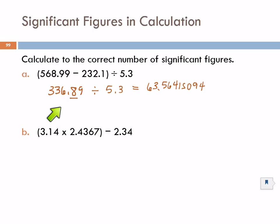So here we have four sig figs divided by two sig figs. So 2 is the smallest. So this answer should only have two significant figures. That second significant figure is the 3. So then when I round it, I'm going to say that my answer is 64.